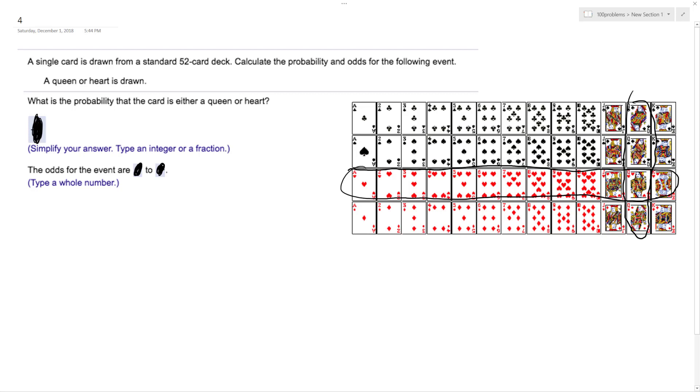Since there's a card that's both a queen and a heart, that just means for our numerator on our probability, we're going to have 13 plus—and then there's already one queen that's in with the hearts, so we'll just have three queens—and this is all over 52.